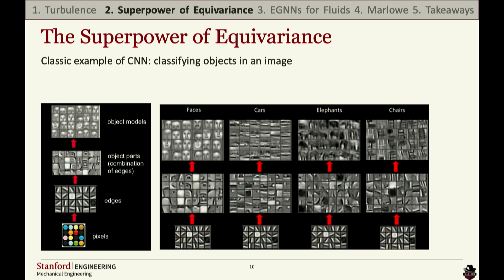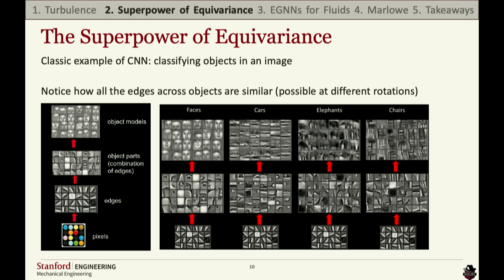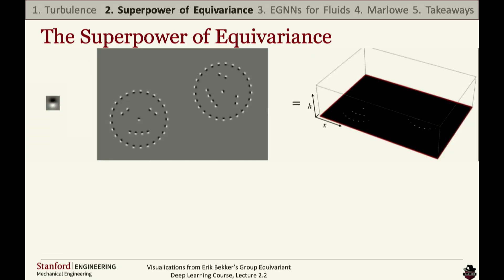If we look at how a CNN operates across different objects — faces, cars, elephants — all the edges in the bottom row are pretty similar. They're just rotations and deviations of each other, so we can use this to make our models more efficient. There's a filter on the right of the screen and an image in the middle. We pass that filter across, and on the left side is the feature map that tells us where the filter matched the image. A CNN passes this filter and indicates where the information is found.